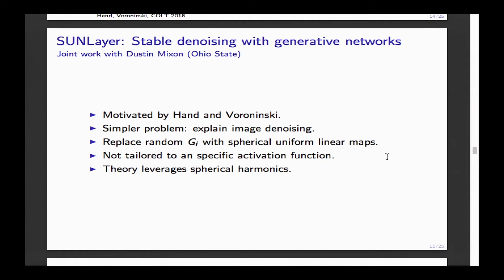I'll now talk about my own work, motivated by Hand and Voroninski. It's a slightly different framework — we don't consider random neural networks, and instead of compressed sensing we consider the simpler problem of image denoising. We replace the random assumption with the requirement that the map be spherically uniform, and we're not tailored to ReLU specifically — we identify which properties of activation functions are useful for our framework.